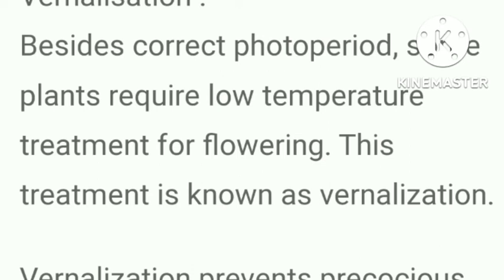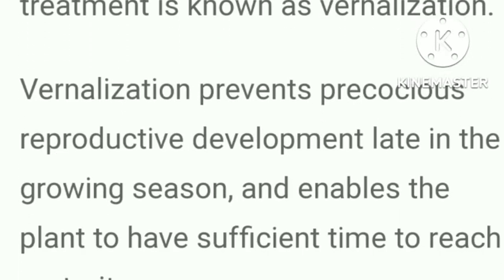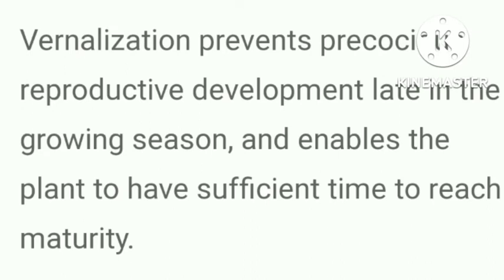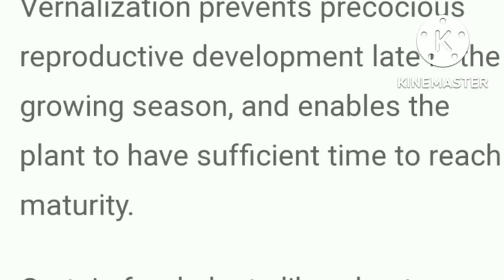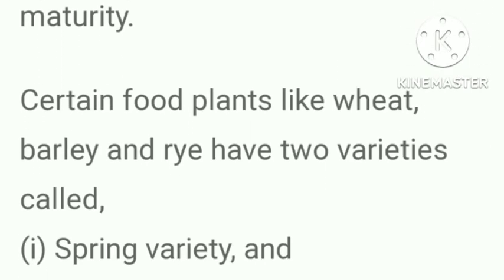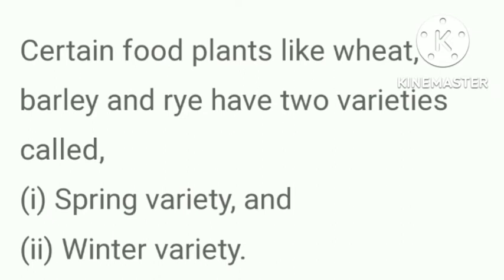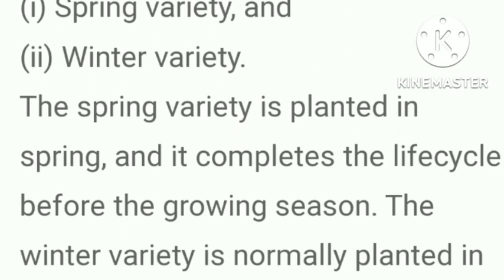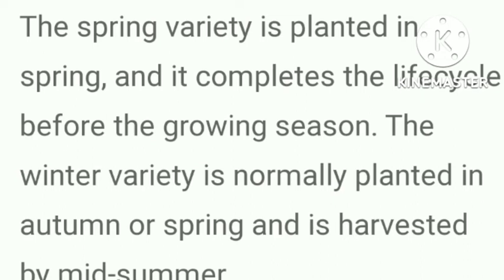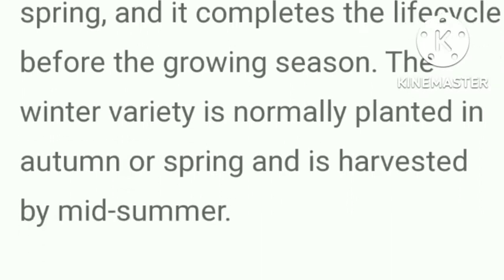Vernalization: besides correct photoperiod, some plants require low temperature treatment for flowering, known as vernalization. It prevents precocious reproductive development and enables the plant to have sufficient time to reach maturity. Certain food plants like wheat, barley and rye have two varieties: the spring variety planted in spring completes its life cycle before the growing season, while the winter variety planted in autumn is harvested by midsummer.